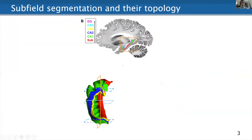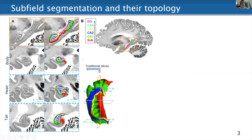Here is the manual segmentation that we did. We have the hippocampus embedded in the temporal lobe, and here are just a few slices where we often see the hippocampus. At the top is a sagittal slice, a coronal slice in the area we most often sample — the hippocampal body — and it has this familiar inward curl. I also want to highlight a few slices from the anterior hippocampal head and hippocampal tail at the back.